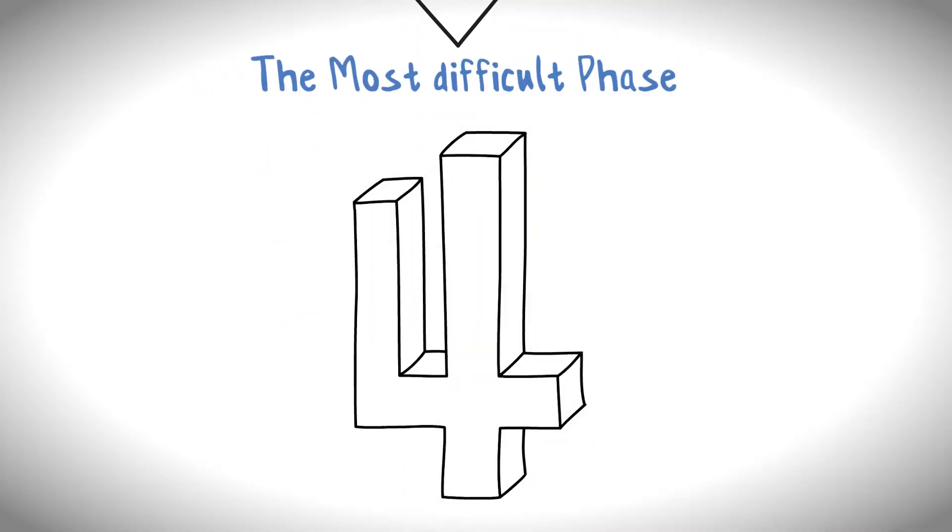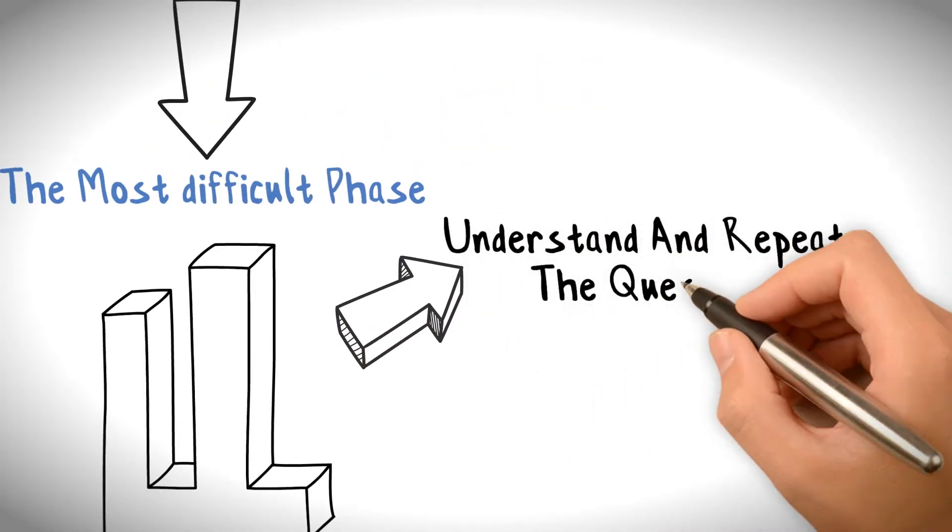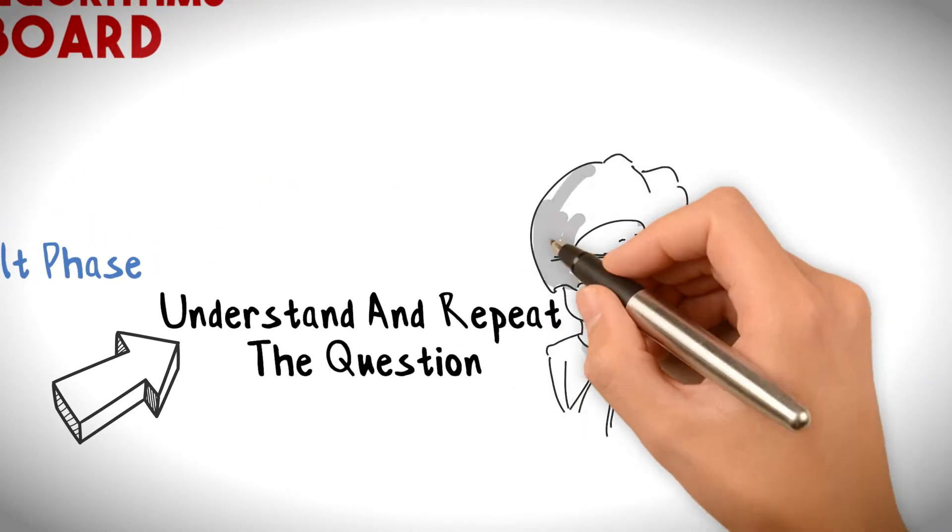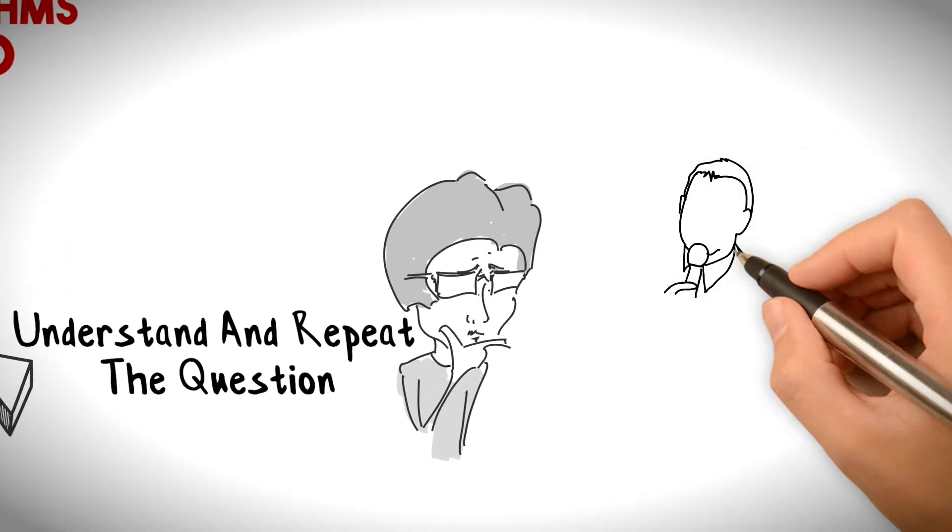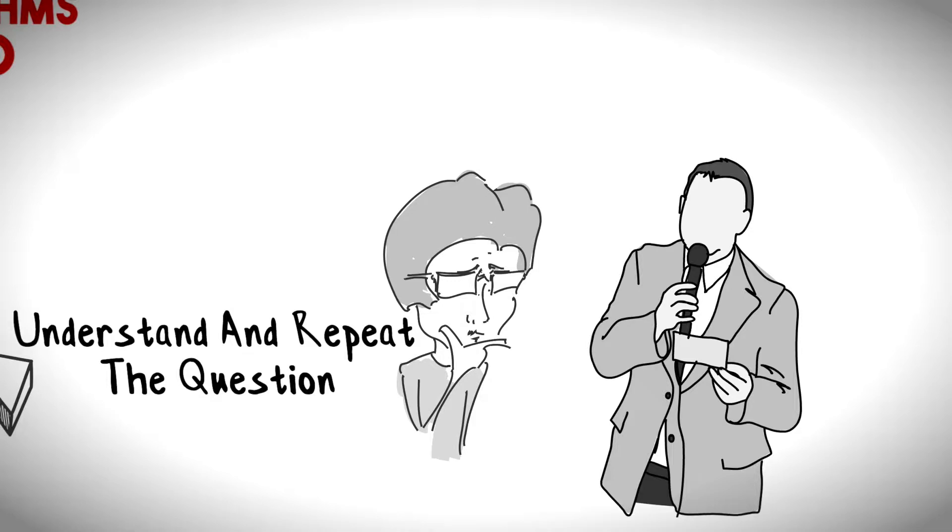Understand and repeat the question. The first thing you need to do is to pay close attention to the question. Ask interviewers if something is not clear. Once you are comfortable with your understanding, next thing you need to do is to repeat the question loudly and clearly. This will ensure to the interviewers that you have understood their question.